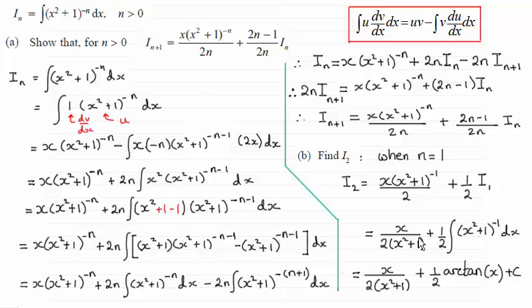And so we get the first term here, and this is the standard integral. 1/(x² + 1) is arctan(x). So you end up with a half arctan(x), and then plus the constant of integration c.